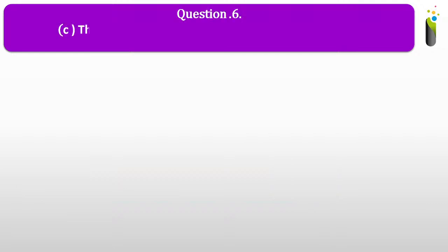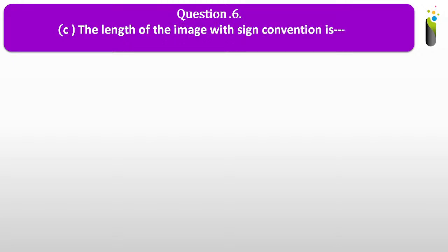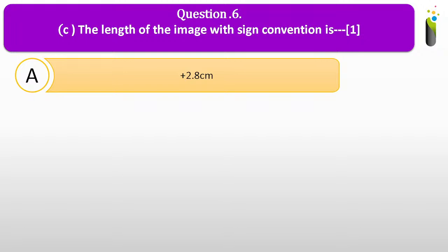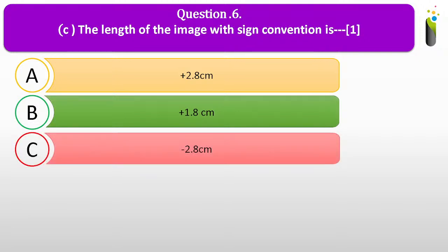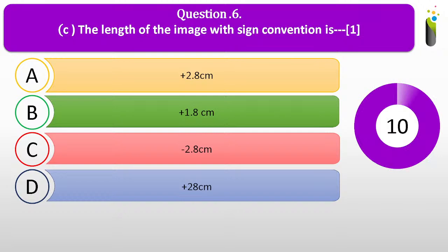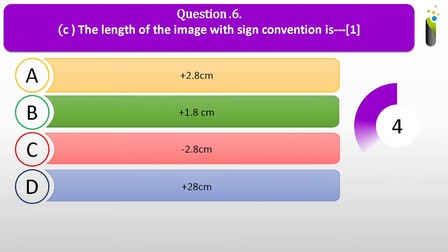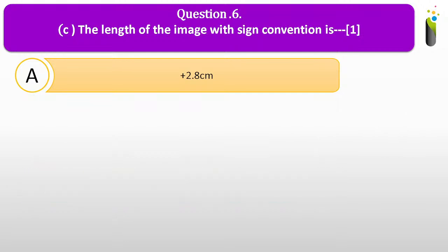Going to the next question, six C. The length of the image with sign convention is dash. The correct answer for this question is A: plus 2.8 cm.